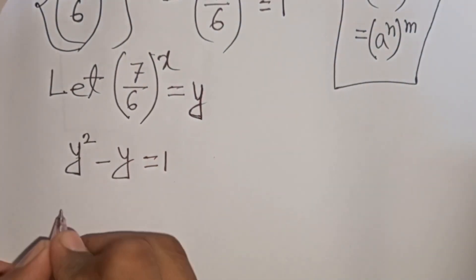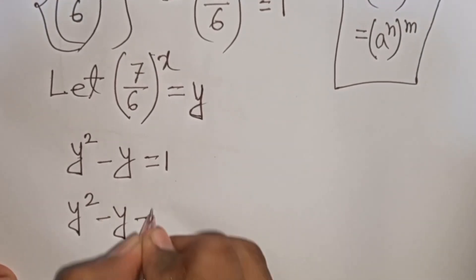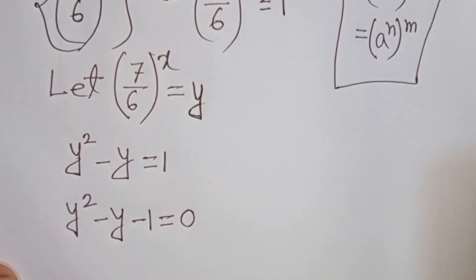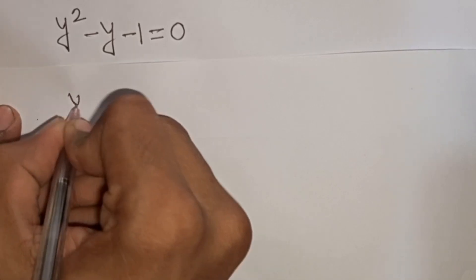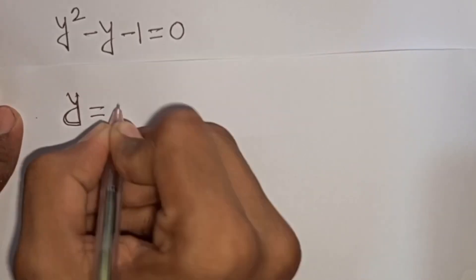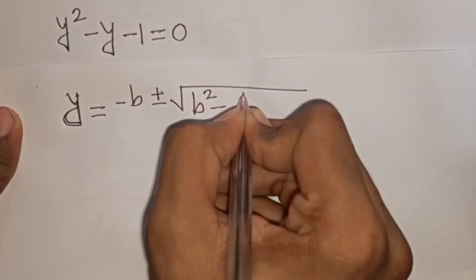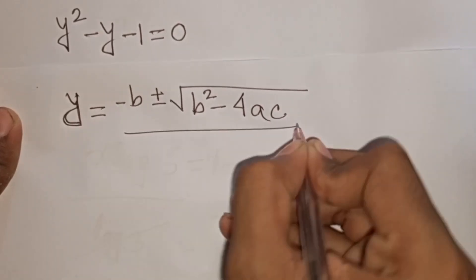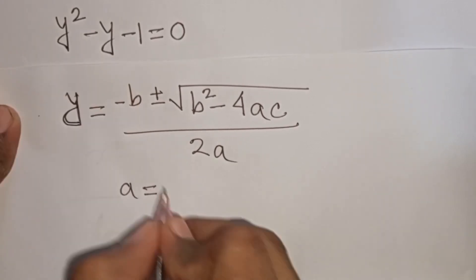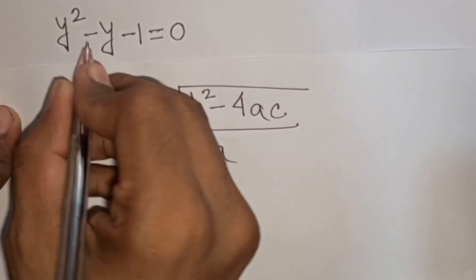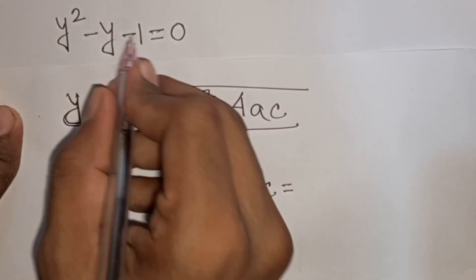We rearrange to get y squared minus y minus 1 equals 0. Now we apply the quadratic formula: y equals negative b plus or minus square root of b squared minus 4ac, all divided by 2a. Here a equals 1, b equals negative 1, and c equals negative 1.